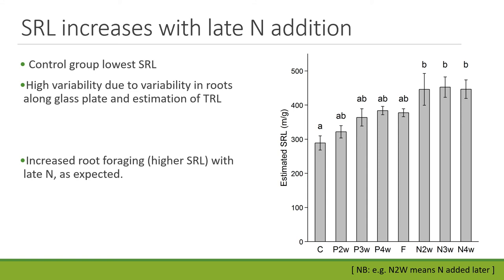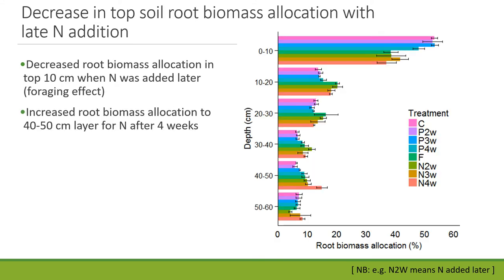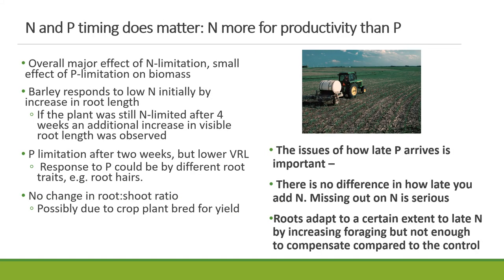Finally, we examined root biomass allocation throughout depth by cutting the rhizotrons open in 10-centimeter layers. As expected for barley, most roots were in the topsoil. But a very clear pattern emerged: plants that received nitrogen late had less root biomass in the topsoil, whereas the control plants and those receiving phosphorus later had higher root biomass investment in the topsoil. Additionally, plants that received nitrogen the latest — after four weeks — showed a slight increase in root biomass in the 40–50 centimeter layer.